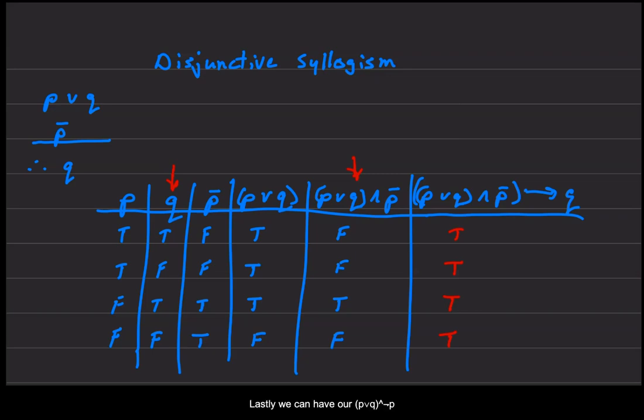Then lastly we can have our P or Q and not P, entire thing, then Q. So we have this column then this column.